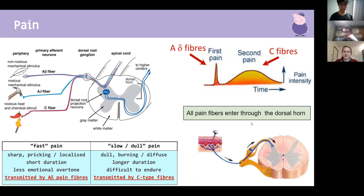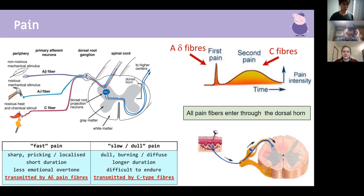Pain fibers enter through the dorsal horn, which is sensory. They synapse there and then go through ascending tracks to be processed upstream in the brain.